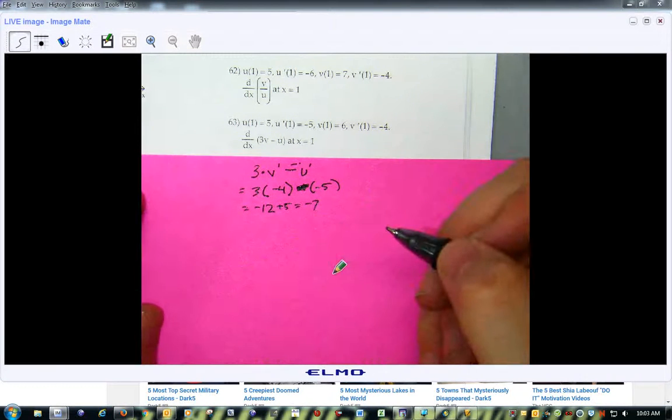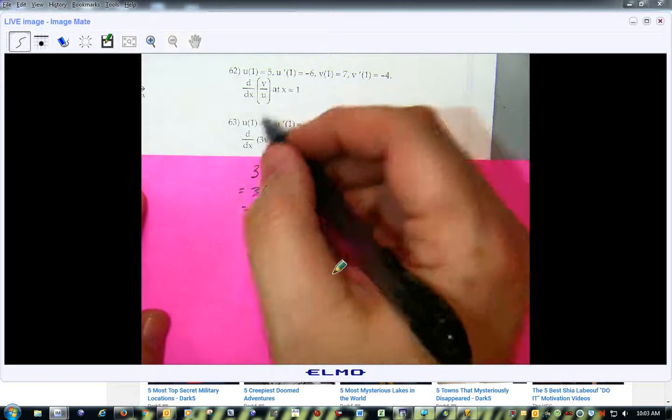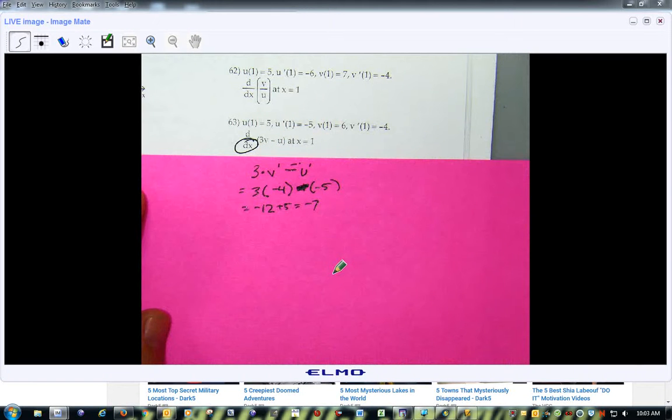Which would be negative 7. And that's all because we're taking it with respect to x, and not with respect to u or v. So be careful with that. Make sense? Yeah. Okay.